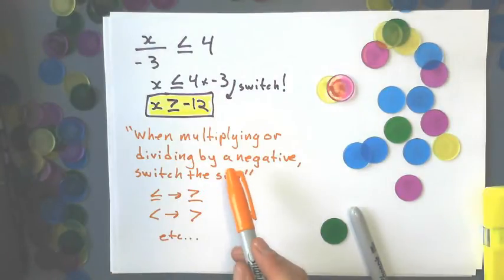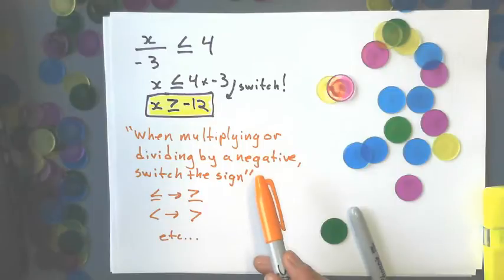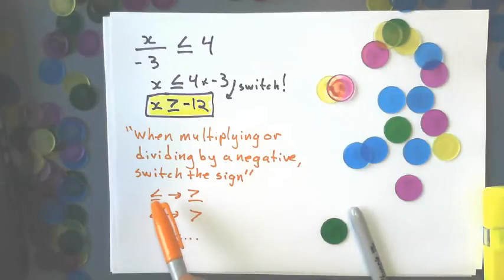Okay, so when multiplying or dividing by a negative on your last step, we switch the sign, and we switch it from this way, less than to a greater than, etc. But I'll give you some examples of where this might be a little bit tricky.